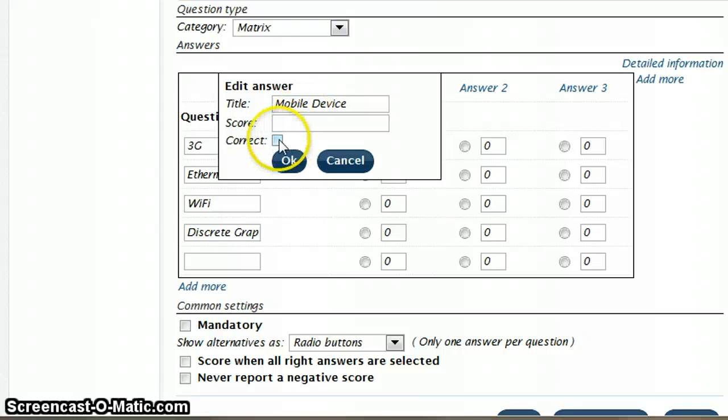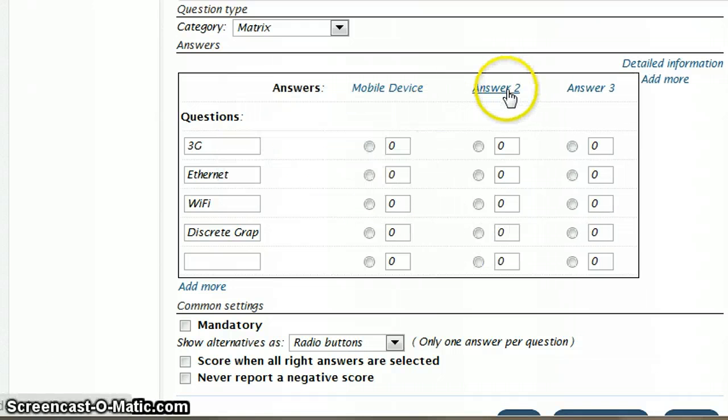I'm not going to put anything in score, and I'm not going to tick correct. That's because if I tick correct, it means that every option in this column will be correct, and that's not the case. And if I put a score in, that score will be associated with every option in this column. That's not how my question is set up.